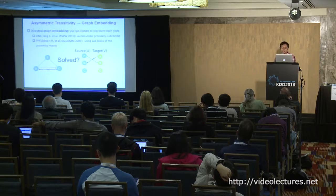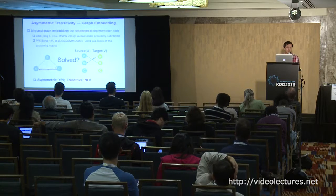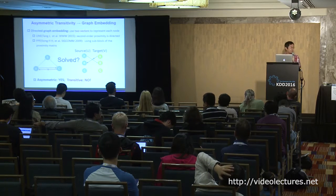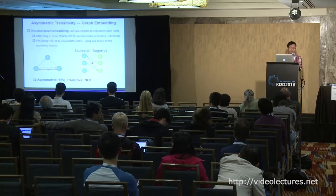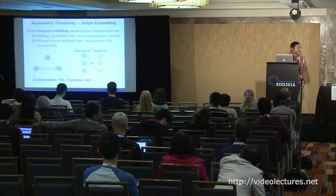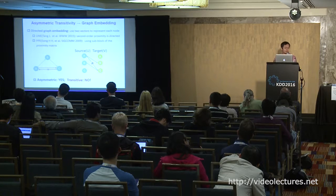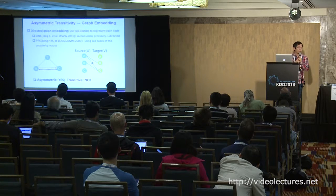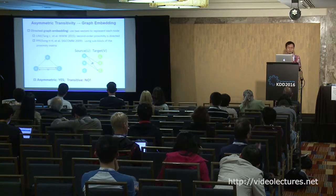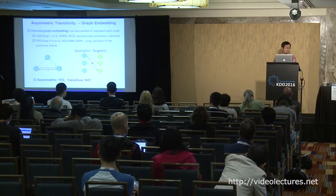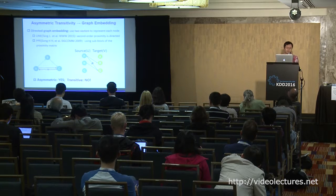It seems these methods solve the asymmetric problem, but the new problem is they may not be fully transitive. If there exists another edge from B to C, from an asymmetric transitivity perspective there should be a directed edge from A to C, but the two-vector approach prevents this from happening: UA is similar to VB, UB is similar to VC, but UA may not be similar to VC. So we have two kinds of existing methods — the first is transitive but not asymmetric, and the other is asymmetric but not transitive.